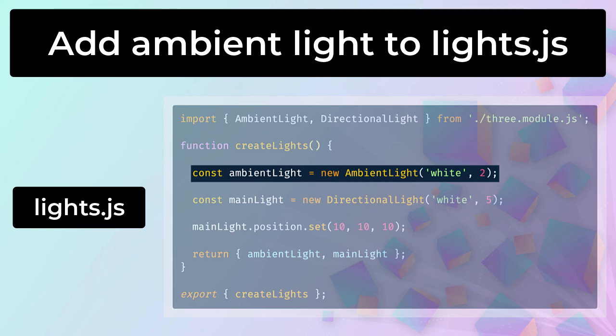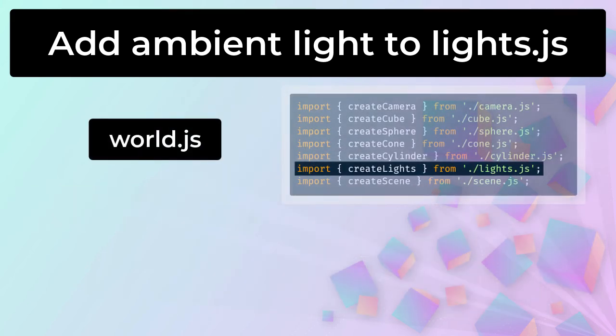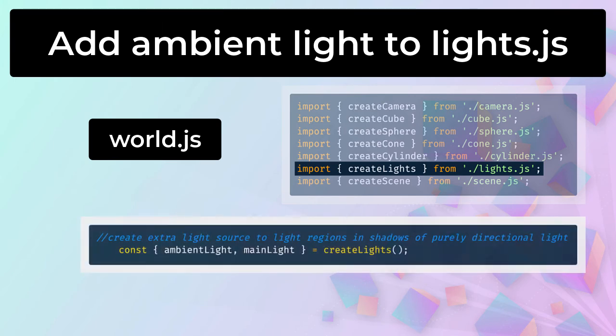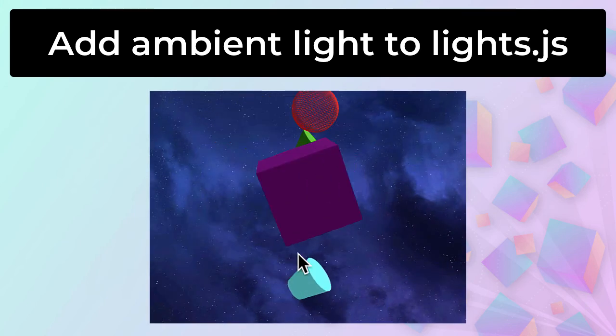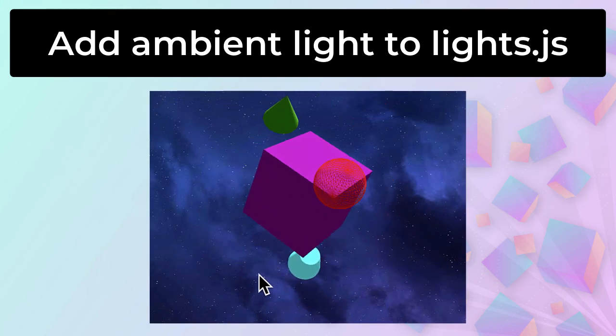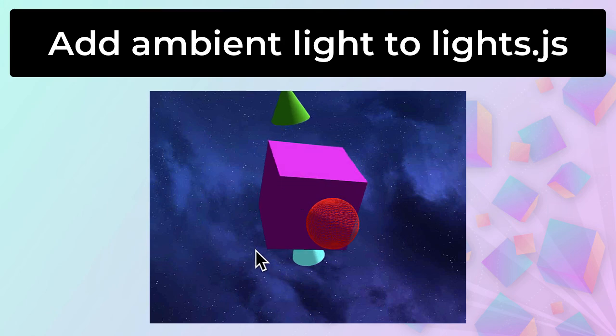Lights are effectively just another object in the scene, and you define them in a similar way. You can see how we've done this in the code block from the lights.js module. After that, you import the revised lights.js module into world.js, just as we have done several times before. And finally, in world.js, it's just a matter of adding both sets of lights to the scene, just like the other objects we've added. Now when we launch our revised Hype project in a browser, the surfaces that are in the shadows are no longer pitch black, no matter where our camera is pointed.